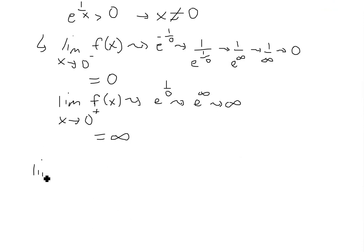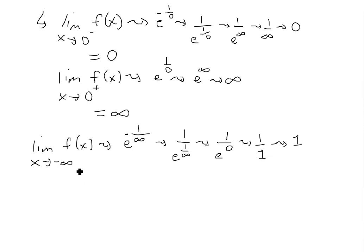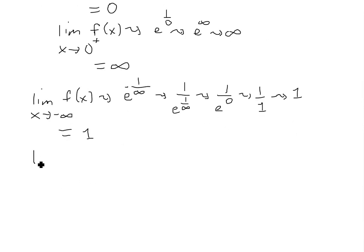We also need to look at what happens as x approaches positive and negative infinity. As x approaches negative infinity, we get e to the 1 over negative infinity. Flipping the sign puts it in the denominator, giving 1 over e to the power of 1 over infinity — and 1 over infinity is 0, so e to the 0 equals 1. So the limit as x approaches negative infinity equals 1.